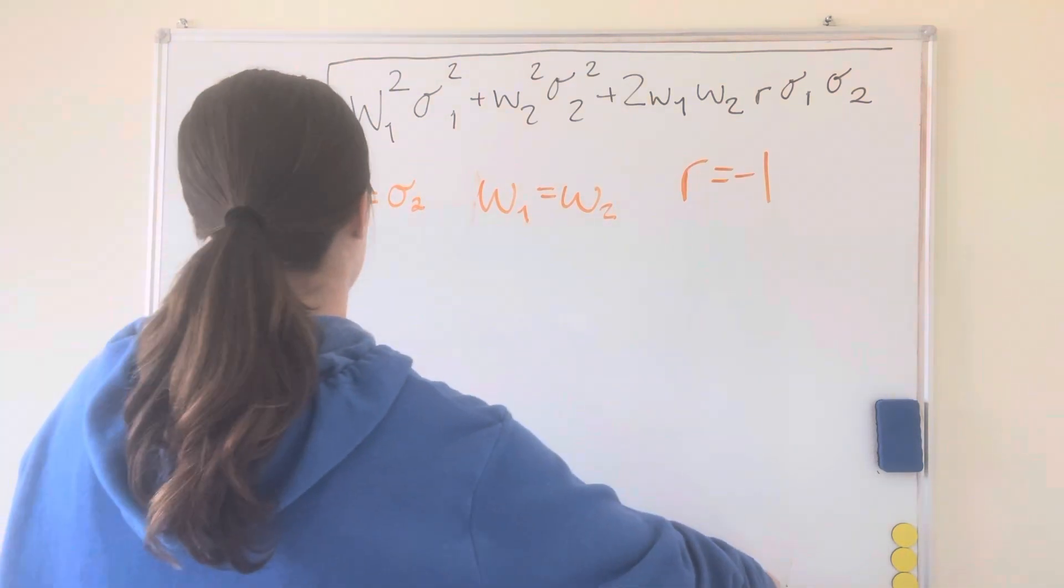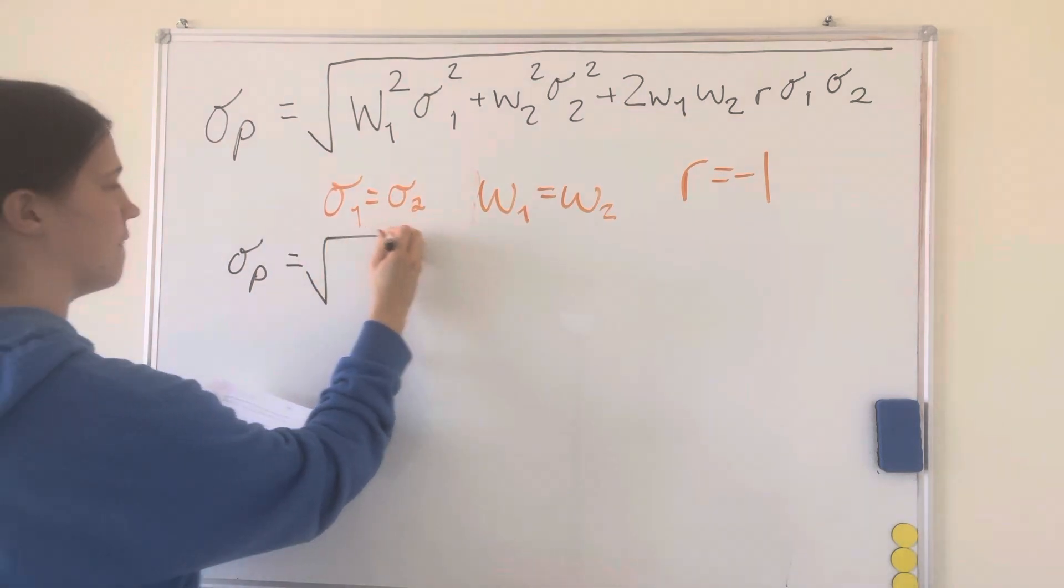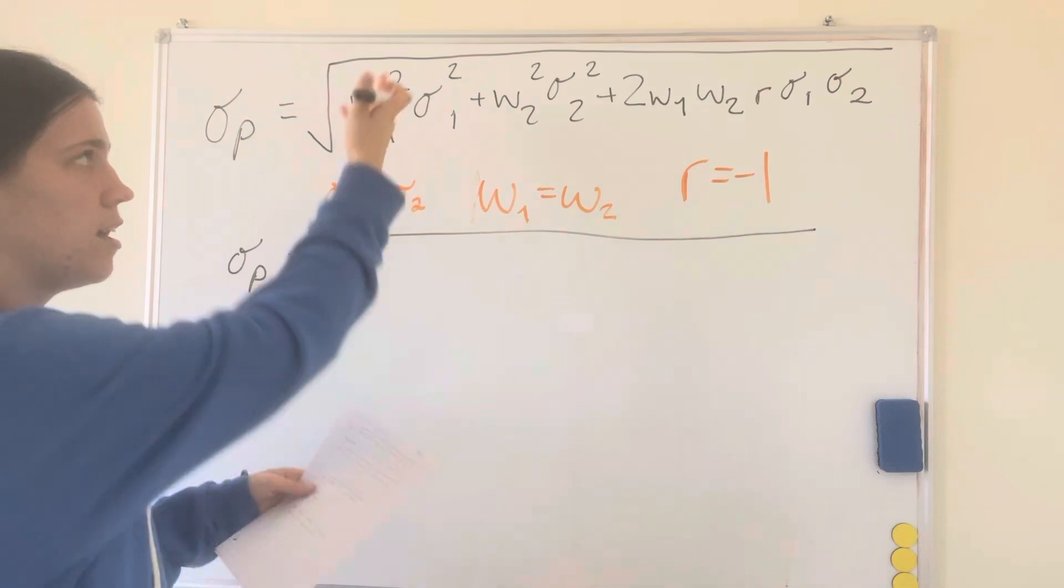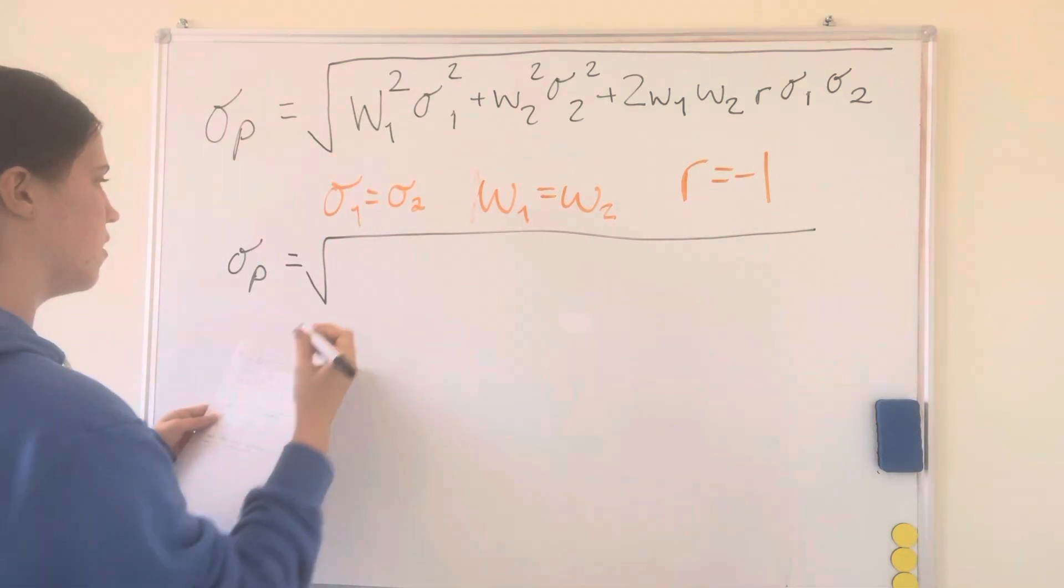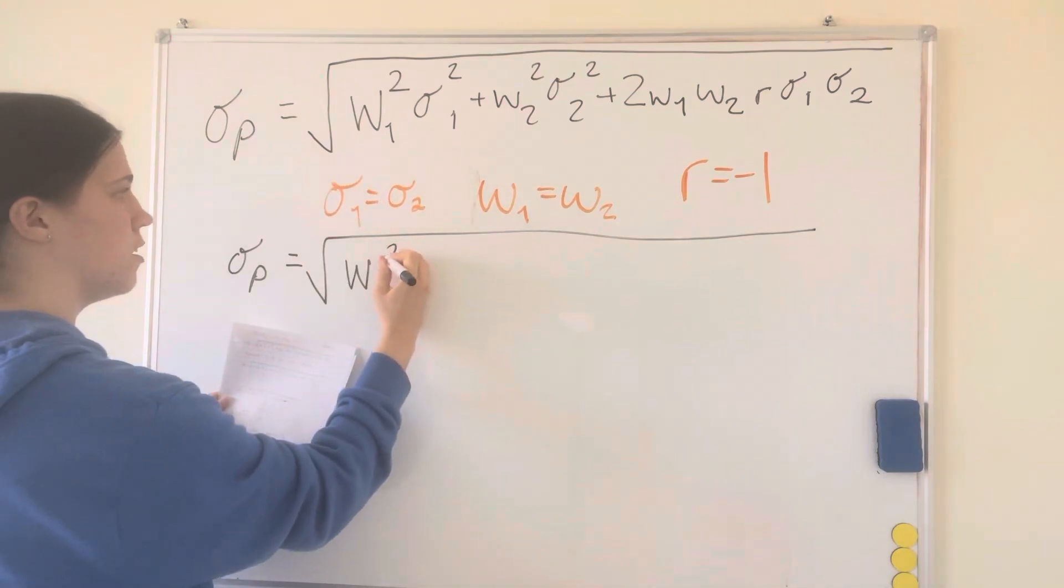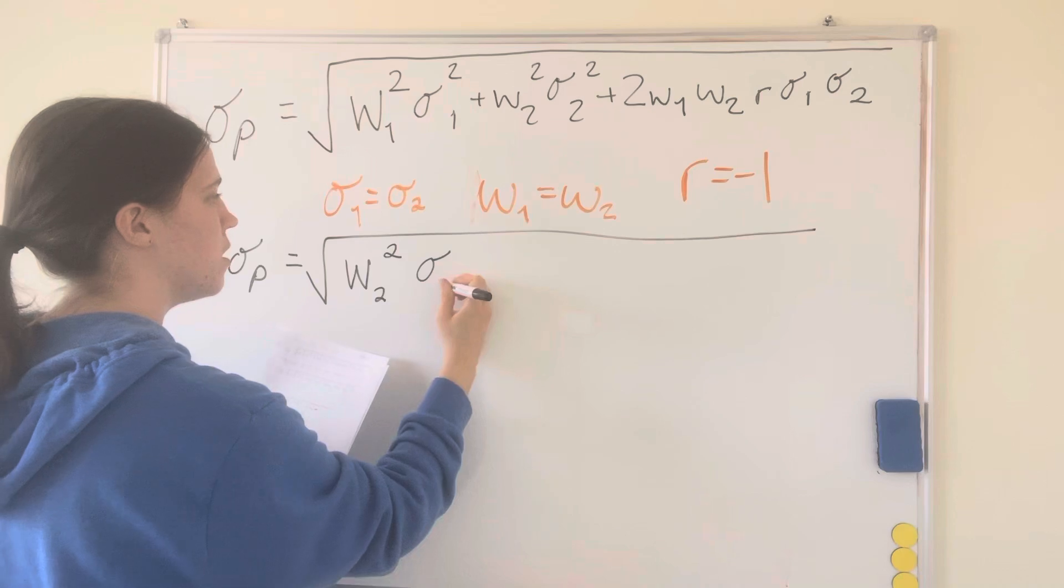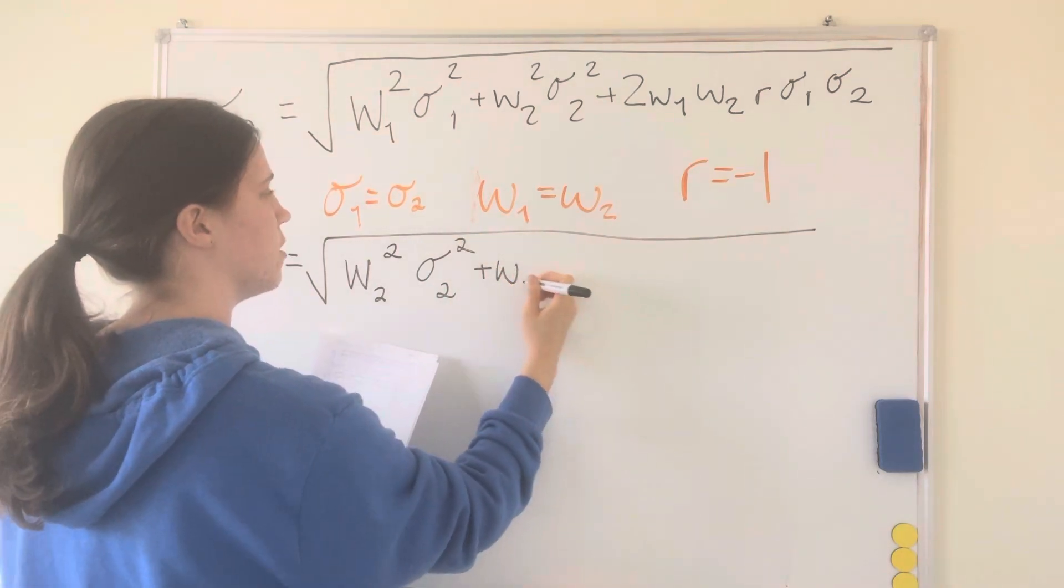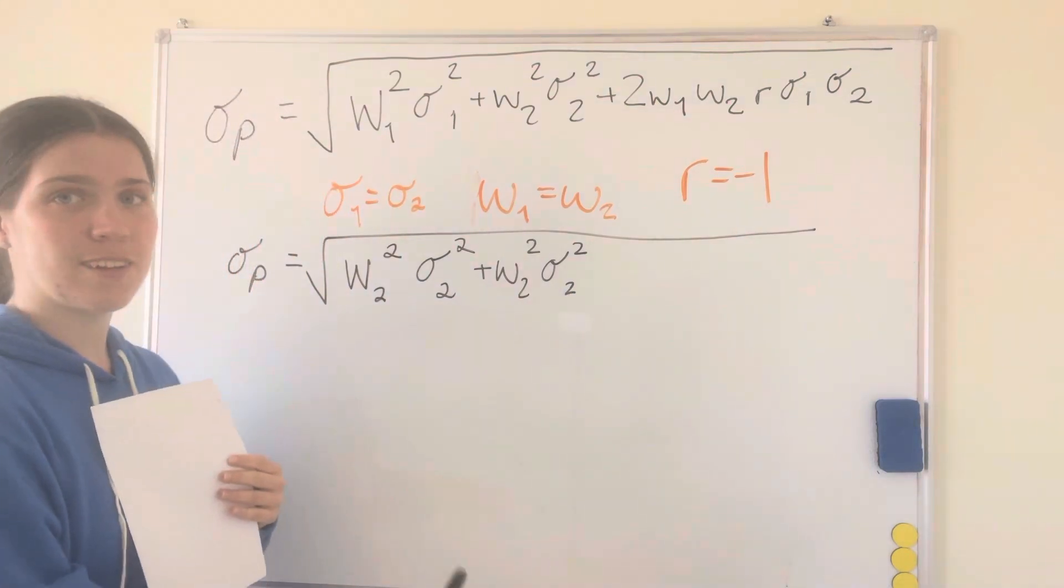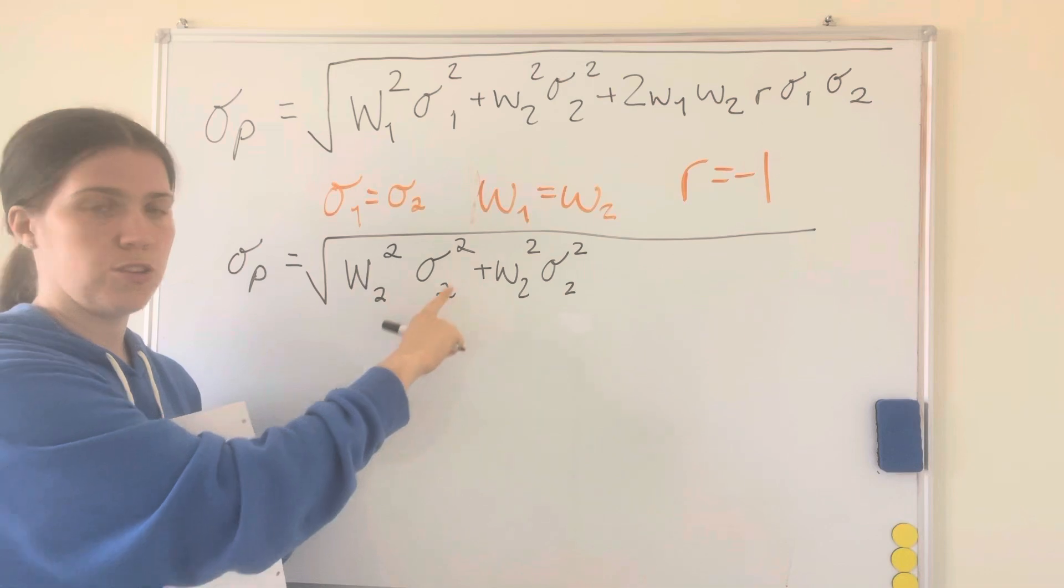So what we're going to do is let's replace the 1s so everything is going to be in 2s. We'll go w2 squared sigma 2 squared plus w2 squared sigma 2 squared. You can probably already see where this is going. Now you can combine these and it could just be 2 w2 squared sigma 2 squared.